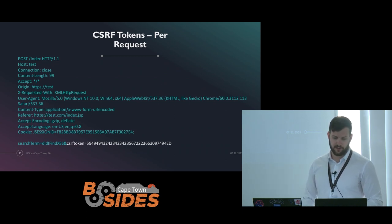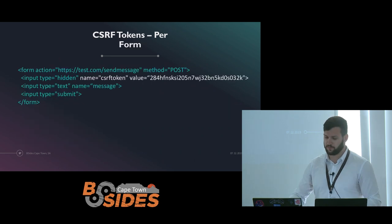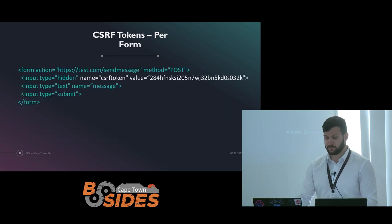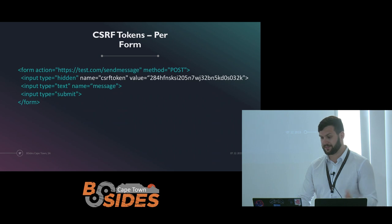Then you have per-form CSRF tokens. I haven't seen a workaround for these yet — and I guess that's the whole point of them: to stop automation. If anybody knows a way to handle these, that would be great.